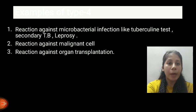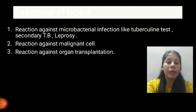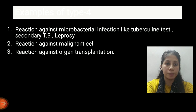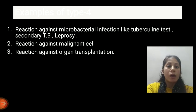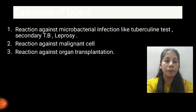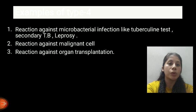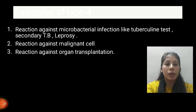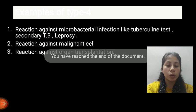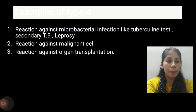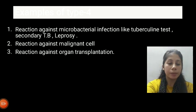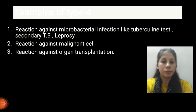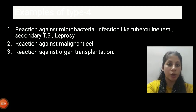Examples of Type 4 Reaction include reactions against mycobacterial infections such as the tuberculin test, secondary TB, and leprosy, as well as reactions against malignant cells and reactions against organ transplantation. These are all the examples of Type 4 Hypersensitivity Reaction. Today's topic is now over. Thank you, class — I hope you understood. In the next lecture, we will discuss another topic. Thank you.